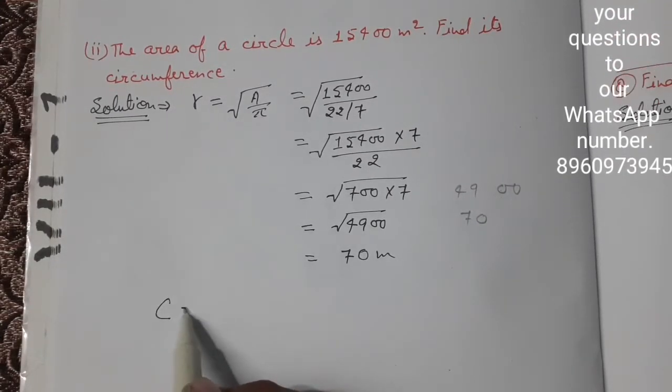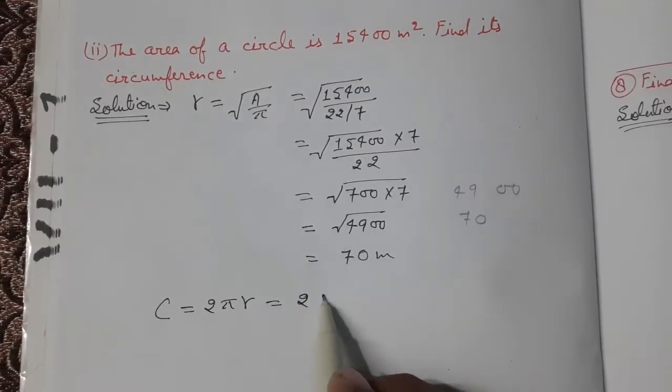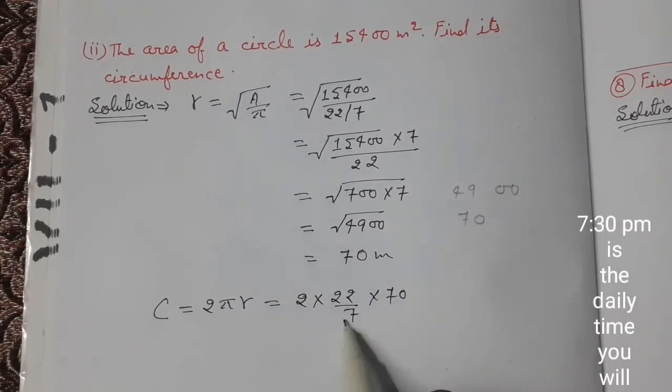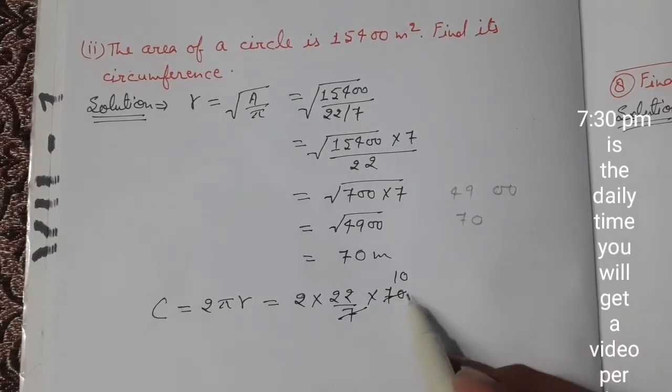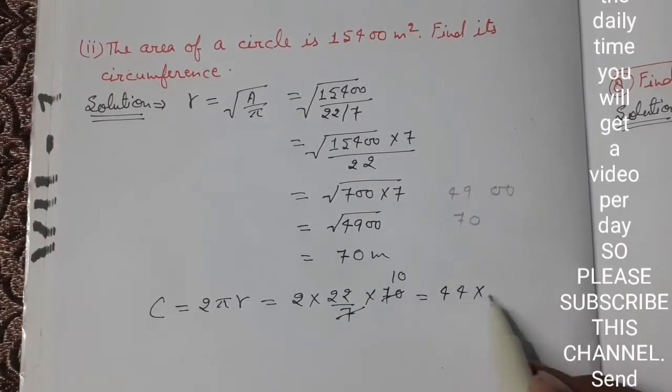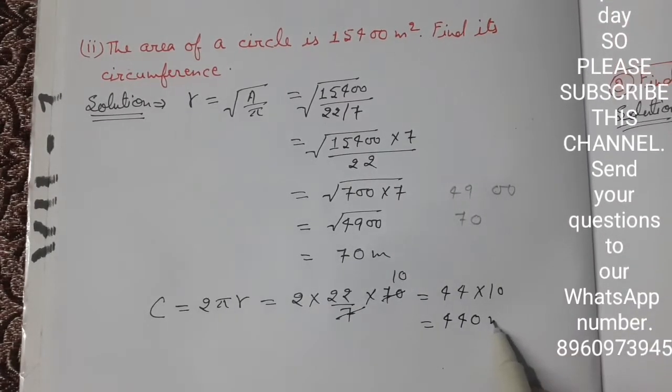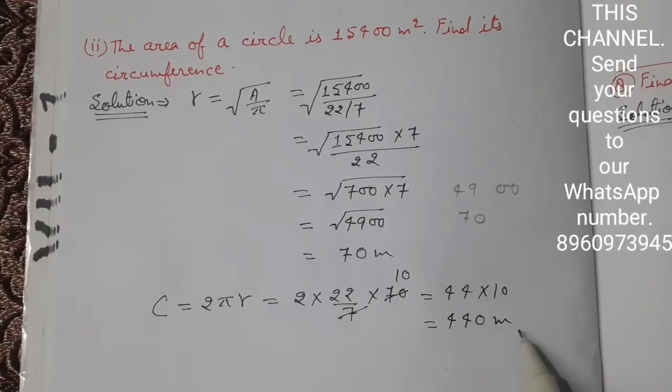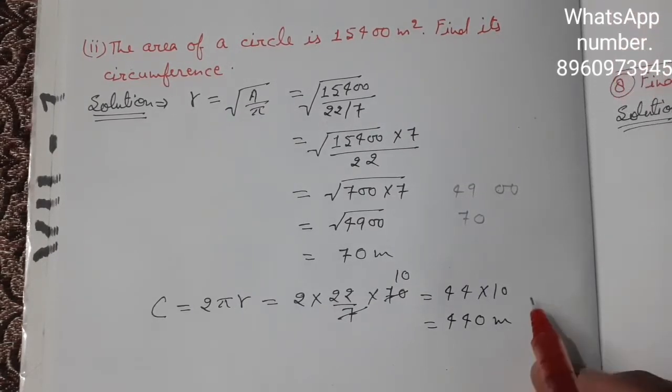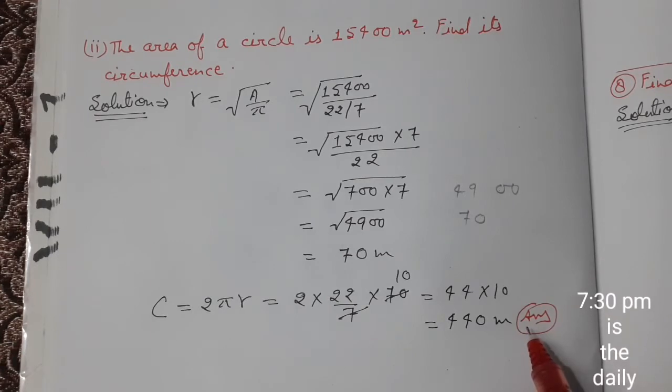Now we have the radius and need to find the circumference. Circumference equals 2πr, where we multiply 2 and π value is 22 upon 7 and radius is 70. This reduces to 44 into 10 which equals 440 meters. In this way we have found the circumference, and this is the final answer.